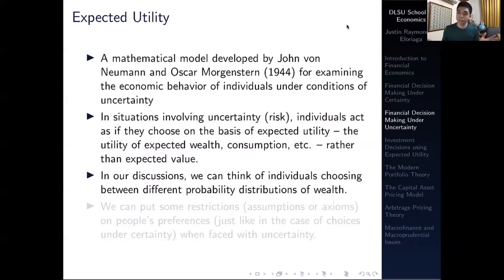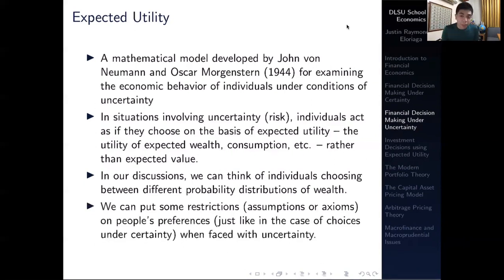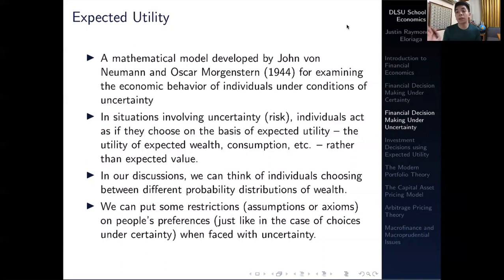We can think of individuals choosing between different probability distributions of wealth. We can put some restrictions — assumptions on consumer behavior — to ensure that a consumer adheres to certain properties we believe are important regarding their preferences, just as in the case of certainty, but this time we are dealing with a scenario of uncertainty. There would be payoffs that are uncertain and the consumer would not know all the factors involved.